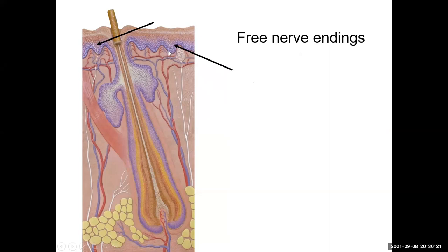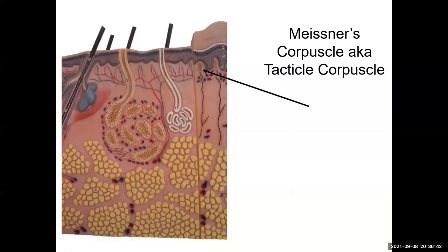Here is a sensory receptor called the Meissner's corpuscle, also known as the tactile corpuscle — located in the papillary layer within the dermal papillae. This shows you can have both sensory receptors and blood vessels in that area. There's also a structure called the free nerve ending, found in the epidermis, which transmits sensory information — particularly pain.